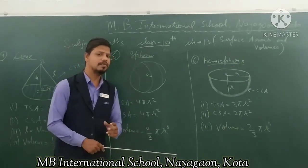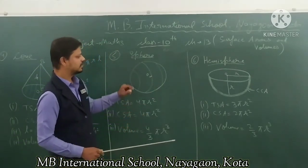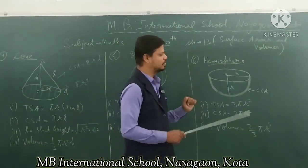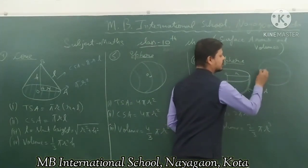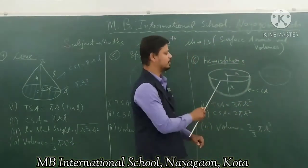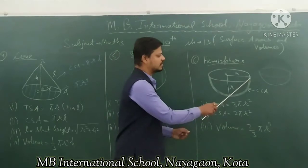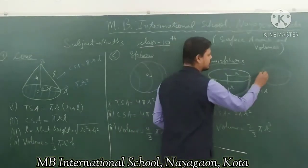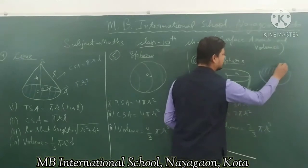After the sphere we discuss hemisphere. A hemisphere is a half part of a sphere — if you cut a sphere in half, you get a hemisphere. The hemisphere has a circular top face, so the area of that circular face is pi r square.